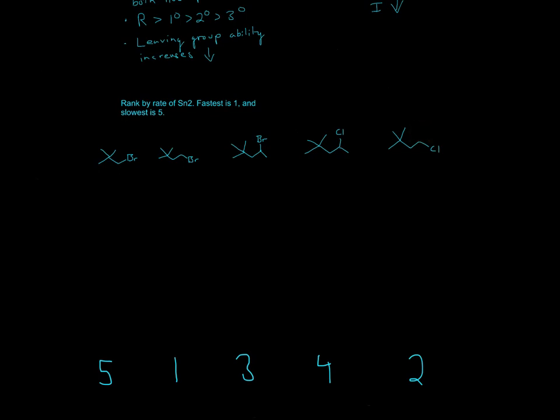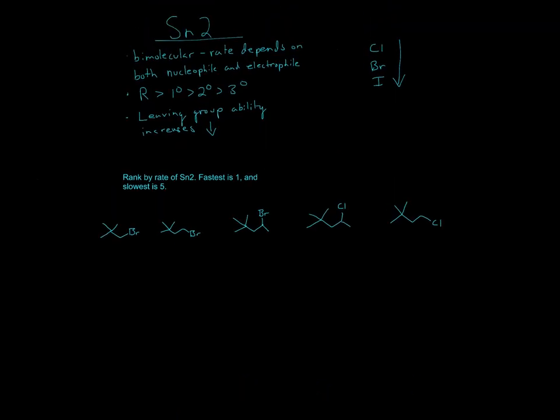So since this is a primary carbon and this is a primary carbon, these two are secondary. We'll look at why the difference between this and this is. This and this is 1 and 2, because primary is preferred. Now, the only thing we have left to judge is leaving group. Br and Cl are different. So let's look at the leaving group trend.